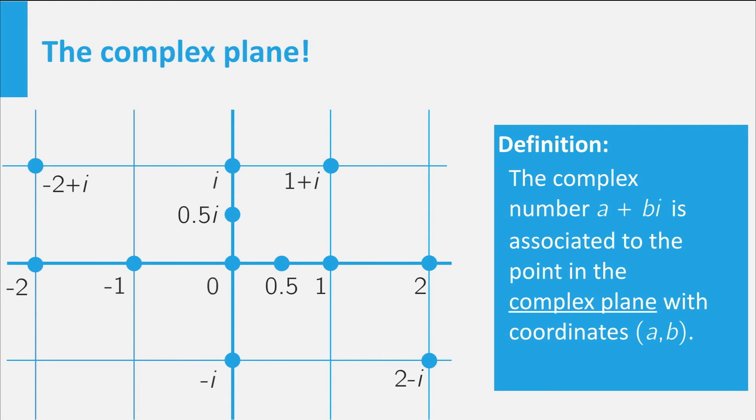The horizontal axis of the complex plane contains all real numbers, it is therefore called the real axis, and it is basically just the ordinary number line. The vertical axis is called the imaginary axis, as it contains all real multiples of i, also called the imaginary numbers.